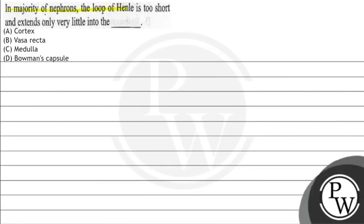Hello, let's see the question: In majority of nephrons, the loop of Henle is too short and extends only very little into the... A) cortex, B) vasa recta, C) medulla, D) Bowman's capsule. Let's have a look at the key concept to solve this question.